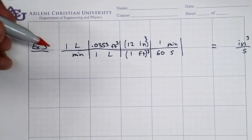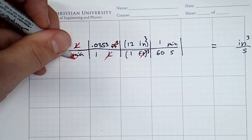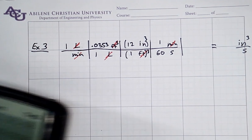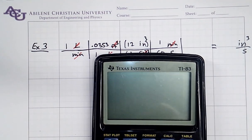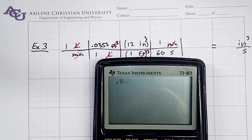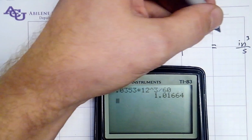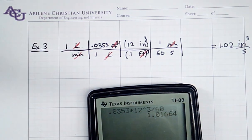I can check my units here. My liters have canceled, my cubic feet have canceled, my minutes have canceled. I'm left with cubic inches per second. Now I touch my calculator. It's malpractice to touch your calculator before you've gotten this far. 0.0353 times 12 cubed. Do not forget that cubed. Divided by 60. And an answer comes out pretty nicely. About 1.02 cubic inches per second.